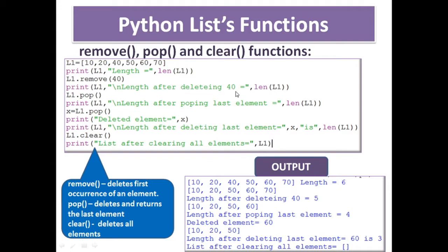After that I am printing the list to verify whether 40 is deleted or not, and what is the length after deletion. In the output, the original list has length 6. After removing 40, the list is 10, 20, 50, 60, 70 and the length is 5 because one element was deleted. Similarly you can delete multiple elements using the remove function.